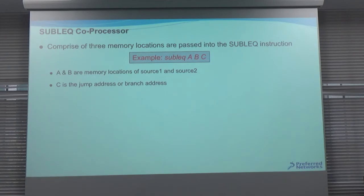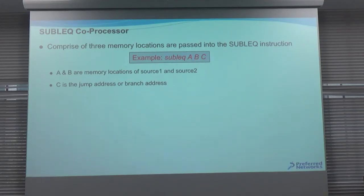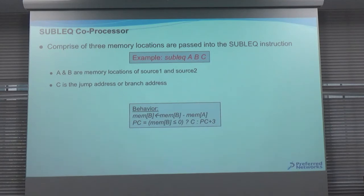Looking at the sublet coprocessor more closely: it comprises three memory locations — sublet A, B, and C. A and B are the memory locations for source one and source two, and C is the jump address — where we want to go after the operation.